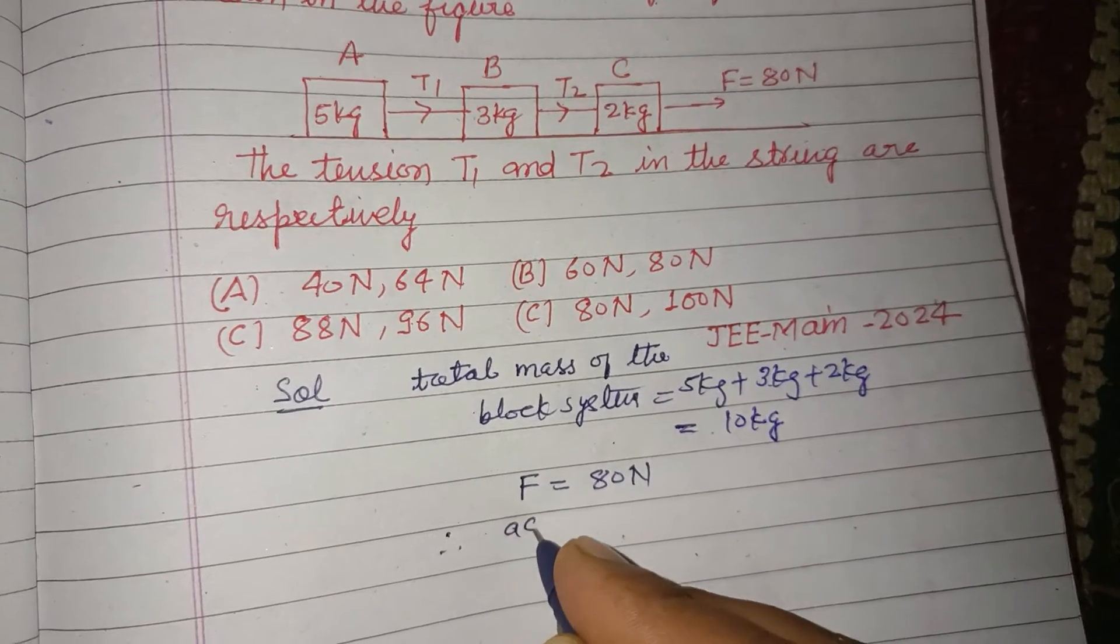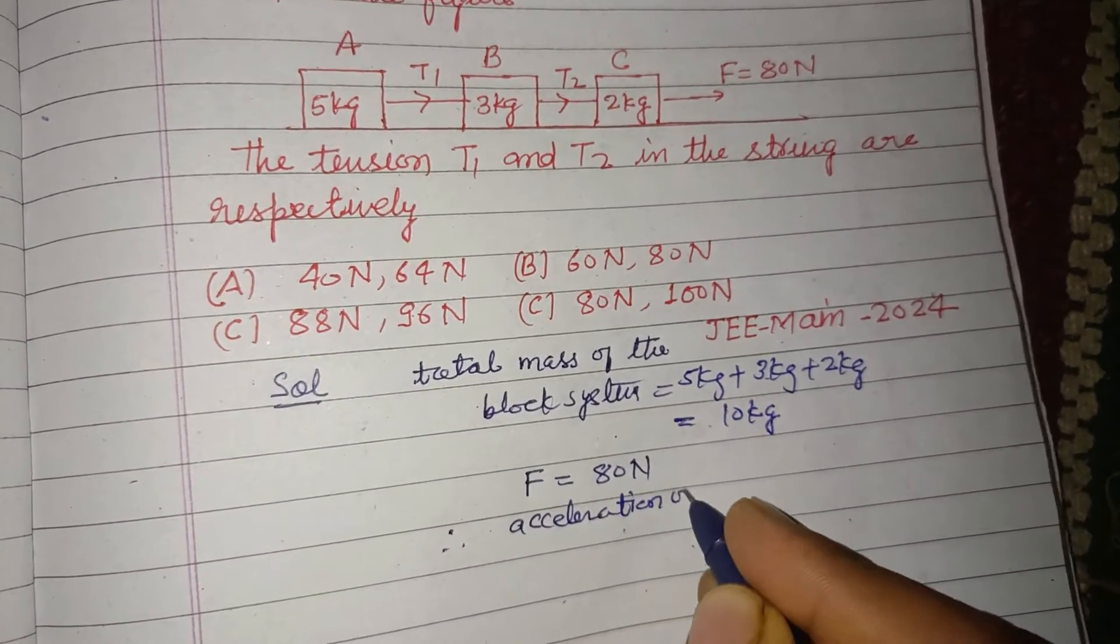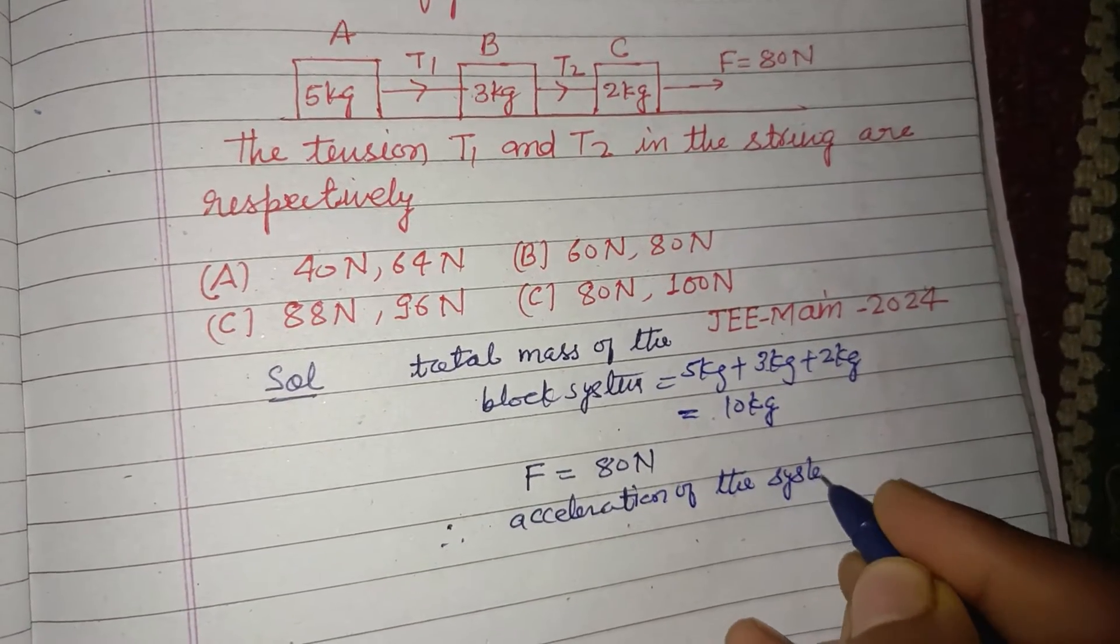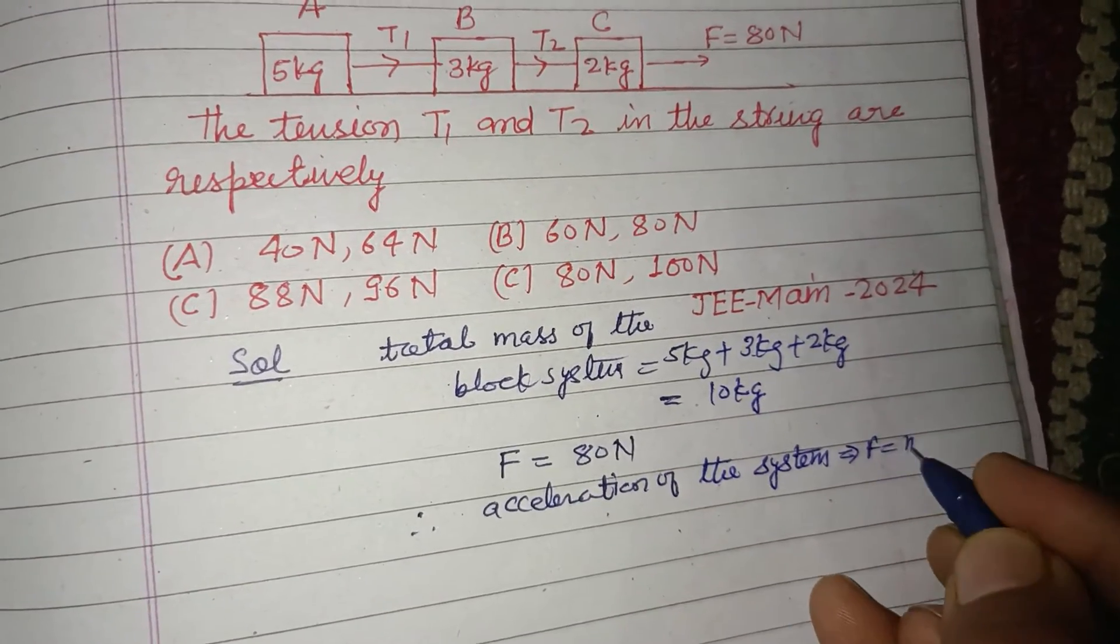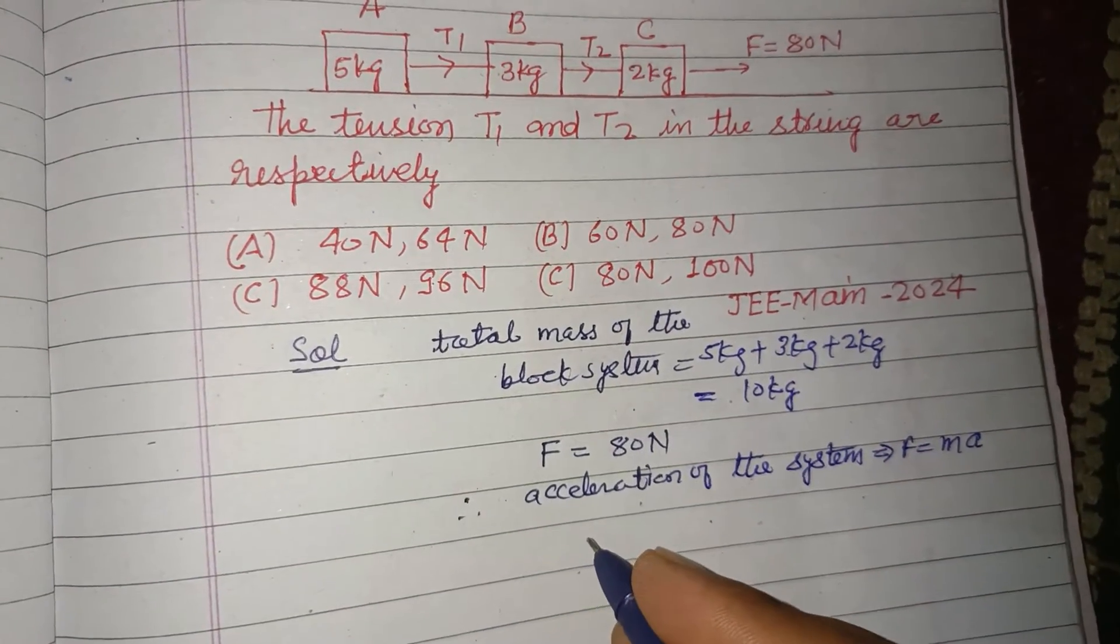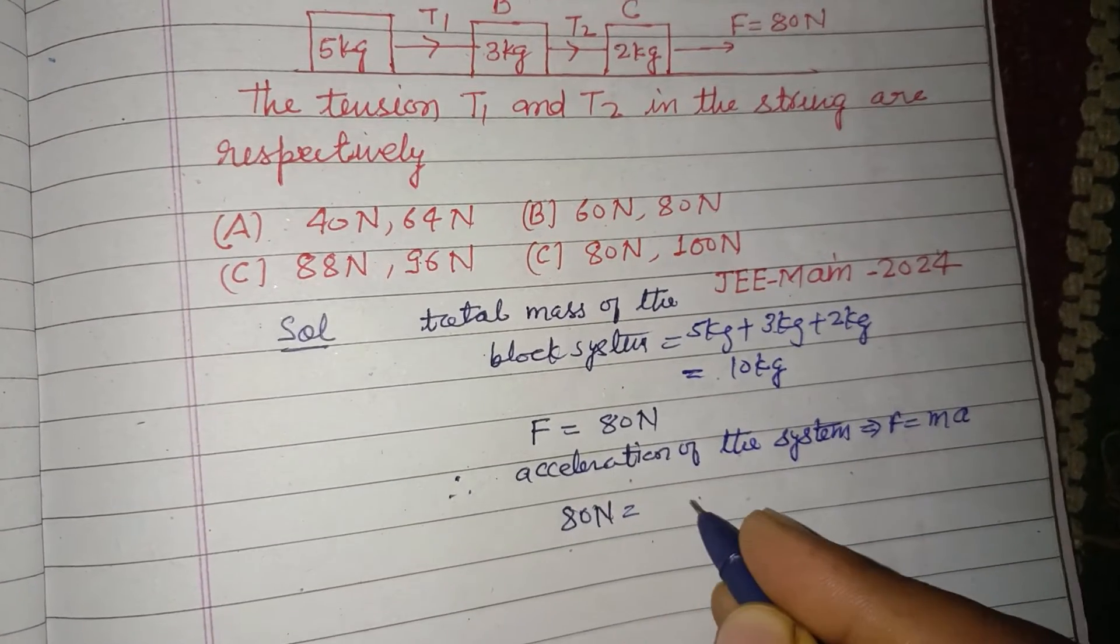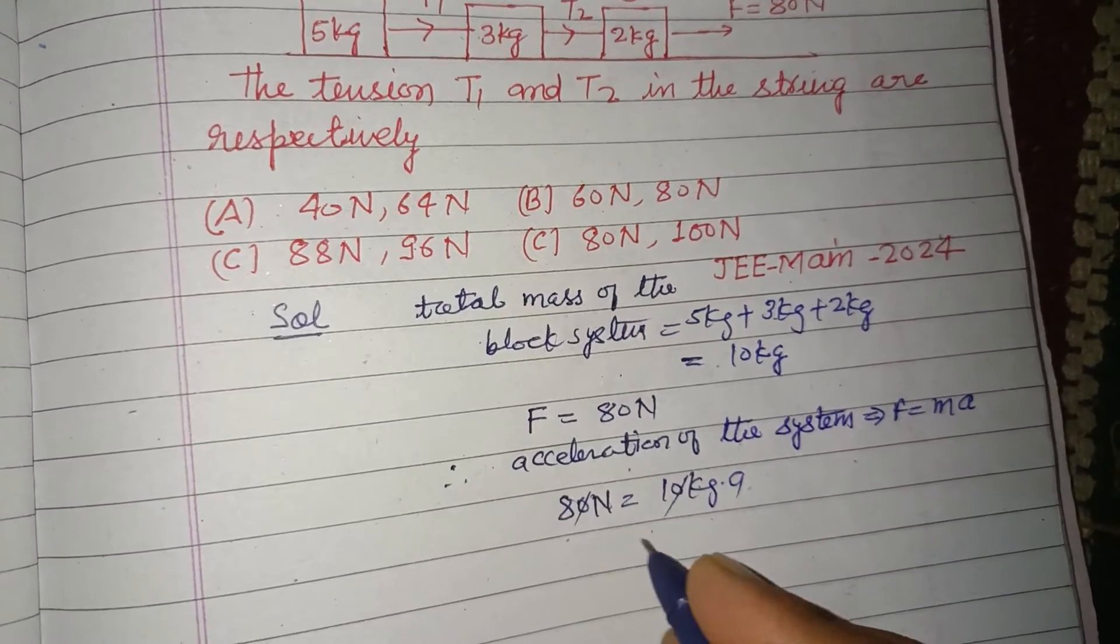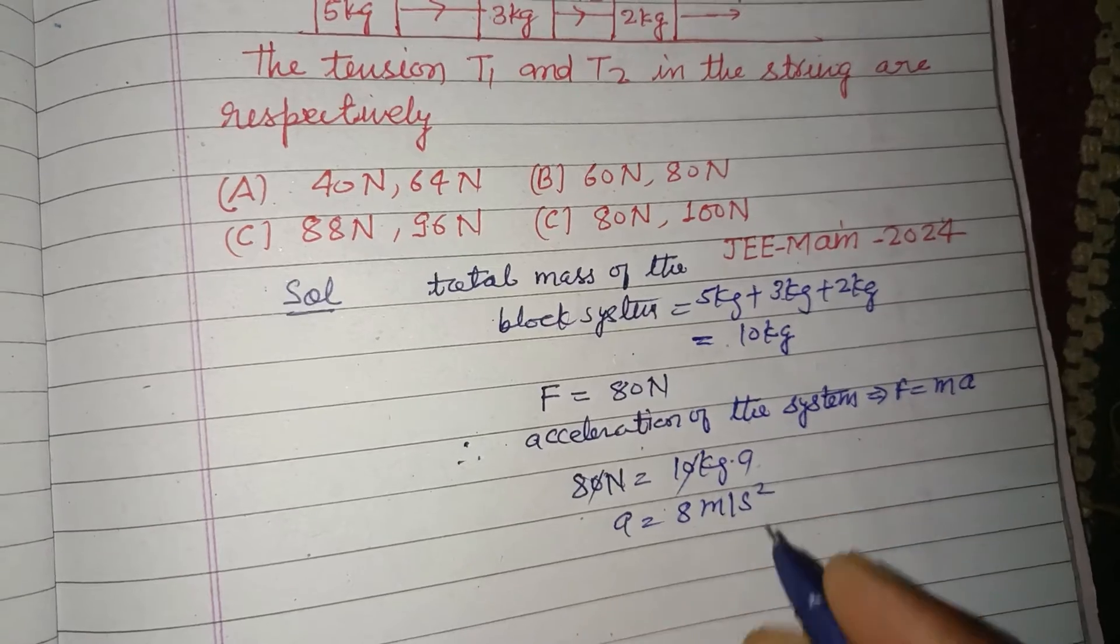Acceleration of the system due to this force: you know that F equals MA, so F is 80 Newton and M is 10 kg into A. So A equals 8 meter per second squared is the acceleration in the system.